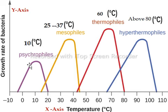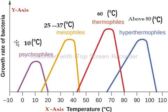Let's talk about how temperature affects bacterial growth. The y-axis represents the growth rate of bacteria. Remember, bacteria are not increasing in size, but they increase in number. Here in this graph, the x-axis represents temperature. In the first graph, we see an increase in rate of bacterial growth.